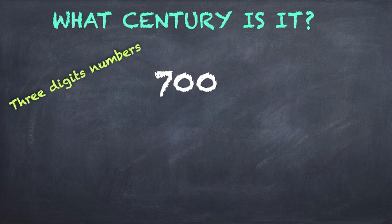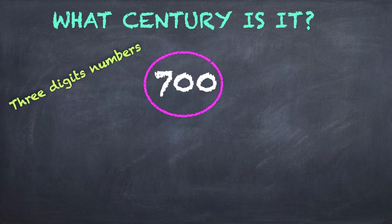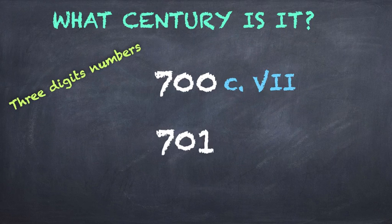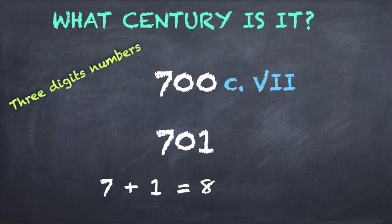But what about 700? Well, remember it's a round number. So from 601 to 700, it will be the seventh century. For the eighth century, it will have to be 701. There you have seven plus one equals eight. Now we have the eighth century.